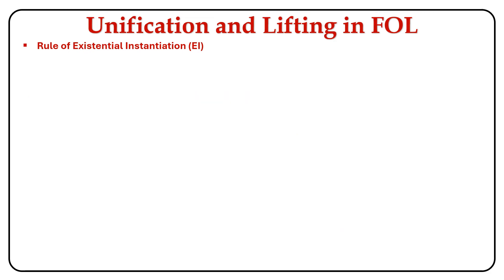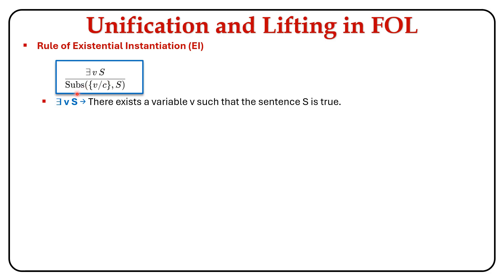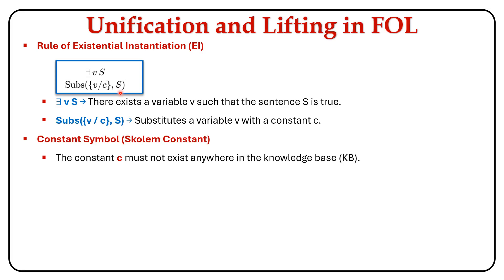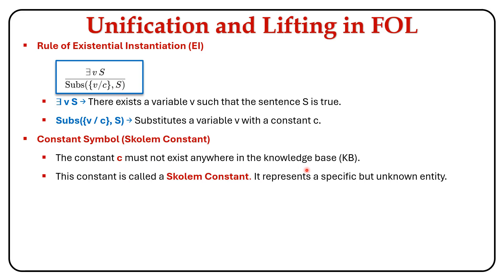Now let's learn about the second rule: the rule of existential instantiation. This rule states that if there exists a variable V such that sentence S is true, then after applying the substitution of the variable with a constant C, we get sentence S as a result. The constant C must not exist anywhere in the knowledge base. This constant is called a Skolem constant, and it represents a specific but unknown entity.